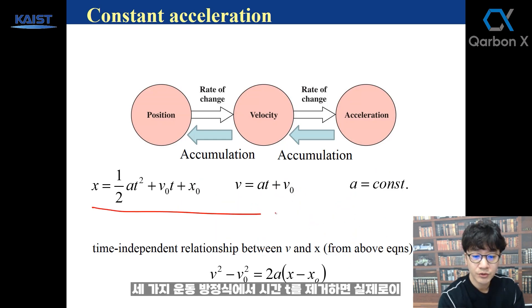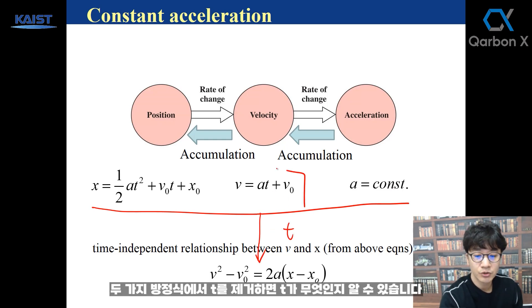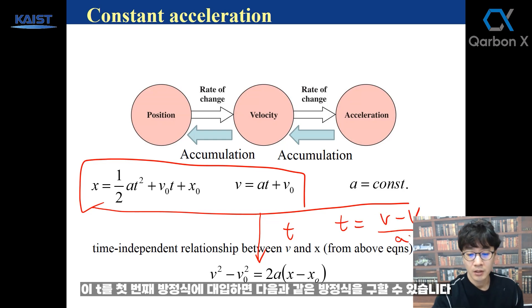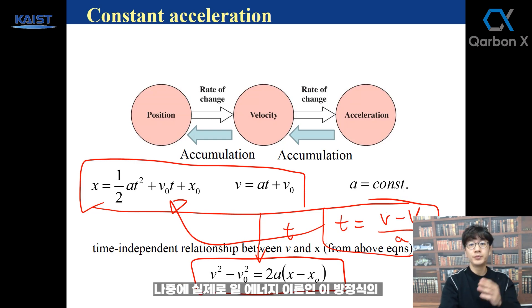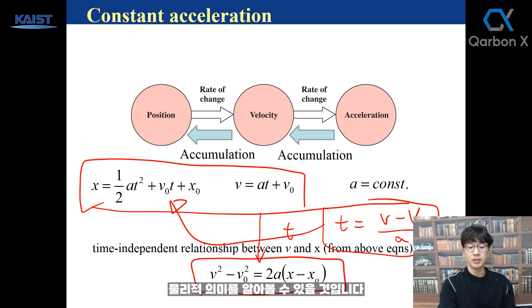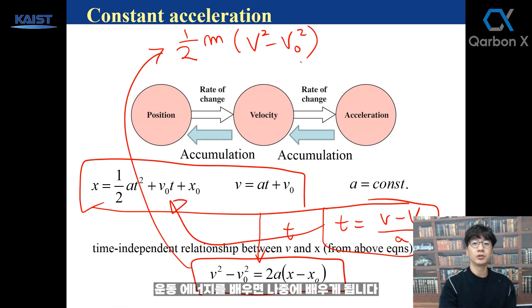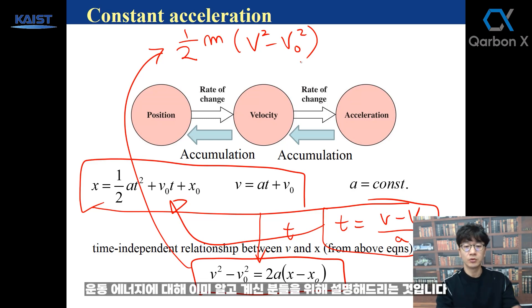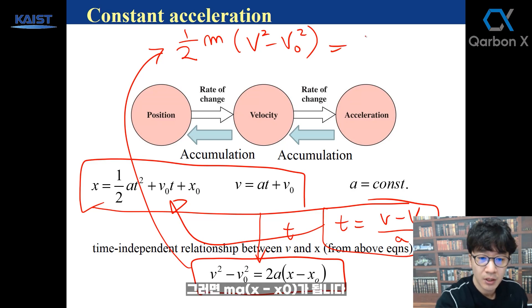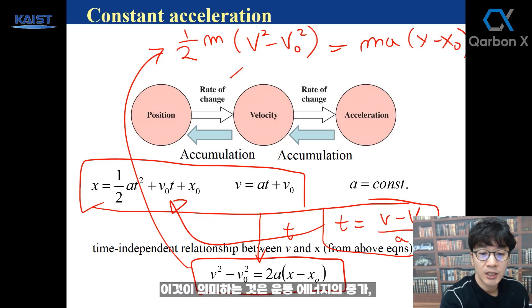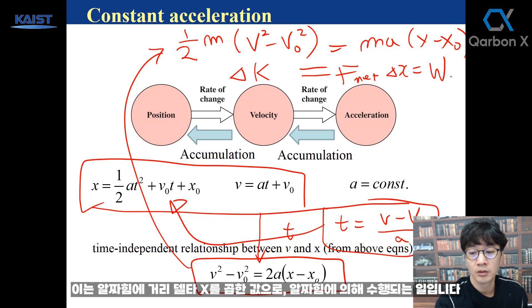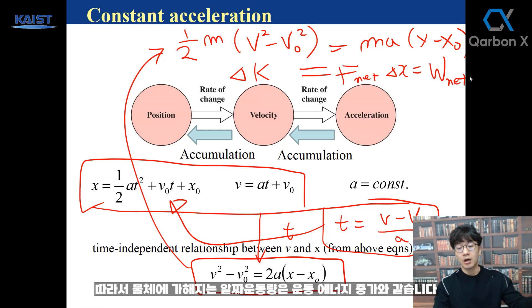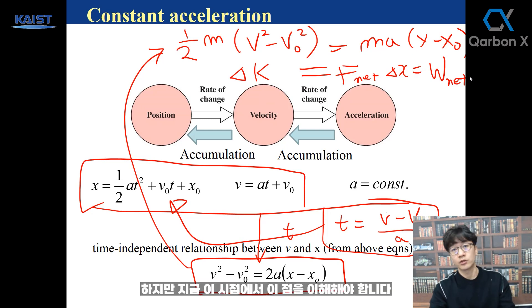From the three equations of motion, by removing time t from two equations, you can derive a third equation. This equation actually represents the work-energy theorem. Multiplying through gives m times a times (x minus x-naught), where the change in kinetic energy equals the net force times distance delta x, which is work. So net work done on an object equals the increase in kinetic energy — but you don't need to understand this fully right now.